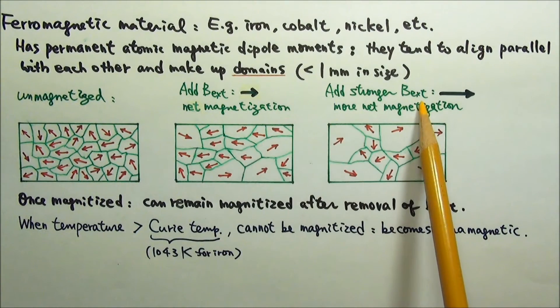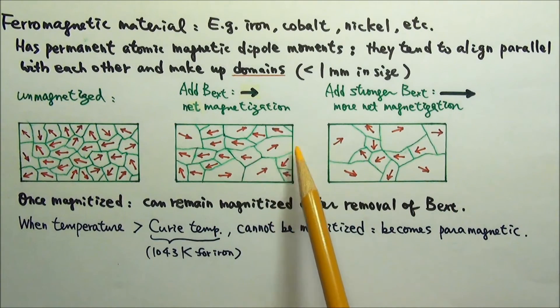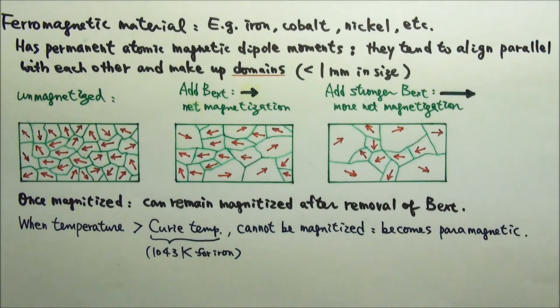When placed in an external magnetic field, those domains closely aligned with the external magnetic field would expand. The magnetization direction of a domain can also rotate to be more aligned with the external field.